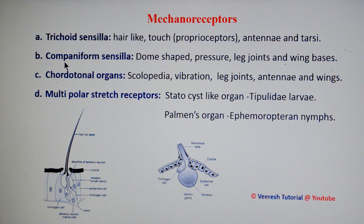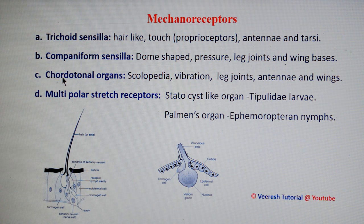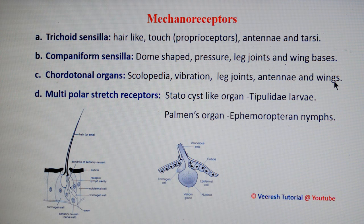The second one is campaniform sensilla. These are dome-shaped sensilla inserted into dome-shaped cuticle, sensitive to pressure, mainly located on leg joints and wing bases. The third one is cordotonal organs. These consist of specialized cells called scolopidia, sensitive to vibration, and located on leg joints, antenna, and wings.